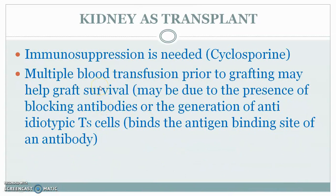There is a way for reducing immunity provocation by kidney transplantation: multiple blood transfusions prior to grafting. If the patient undergoes multiple blood transfusions from the donor before transplanting the kidney, it may help graft survival. The mechanism behind this graft survival has not yet been fully described, but it is believed to be due to the presence of blocking antibodies or the generation of anti-idiotypic suppressor T cells.